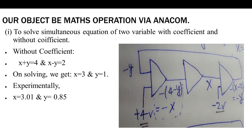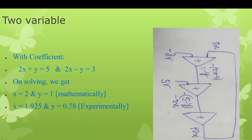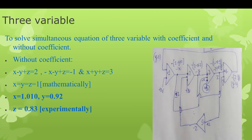Next is two variables with coefficients. I take equations 2x + y = 5 and 2x - y = 3. Mathematically x = 2 and y = 1. Experimentally x = 1.925 and y = 0.7. These are all experimental voltage results. I rewrite as 2x = 5 - y and y = 2x - 3. Similarly, with two coefficients, I use three op-amps connected appropriately to get the nearly correct result.